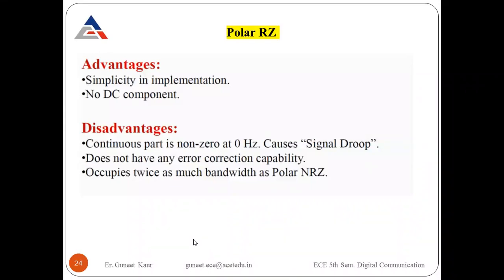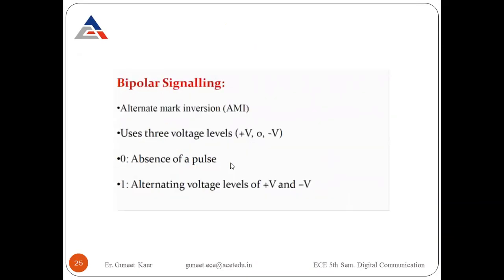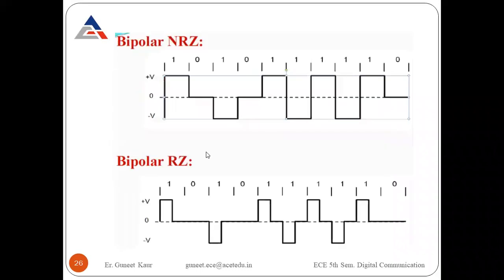Bipolar signaling uses three levels: +V, 0, and −V. For zero there is no pulse; for one, alternating voltage levels +V and −V are used. In the bipolar NRZ waveform, the first one is positive, zero is zero, the second one is negative (alternate mark inversion), then positive, and so on. For bipolar RZ, the signal returns to zero for the second half of each bit period.